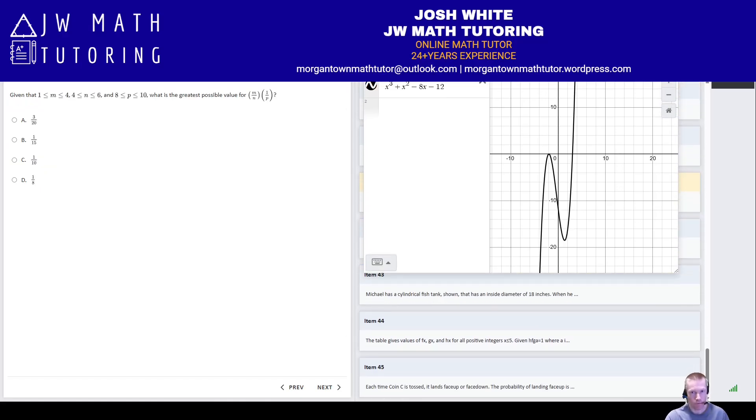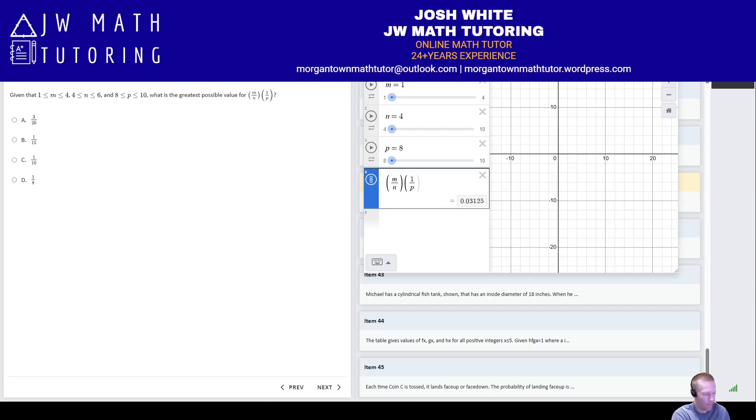All right, let's look next at this problem. So in this problem, we can use sliders. So I'm going to set the range here for M from 1 to 4, and for N from 4 to 6, and for P from 8 to 10. P is 8 to 10. Okay. And we're looking at the value of M over N times 1 over P. So if you don't know the theory behind this, which is that we want N and P to be as small as possible, but we want M to be as large as possible, what we can do is I can fool around the sliders and see what happens when I make the number smaller or larger.